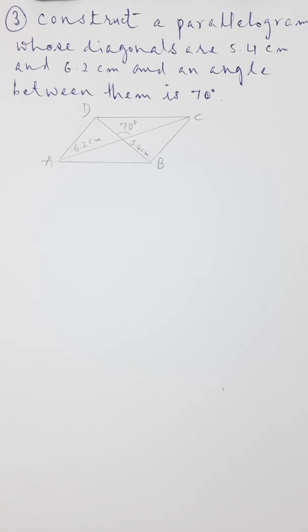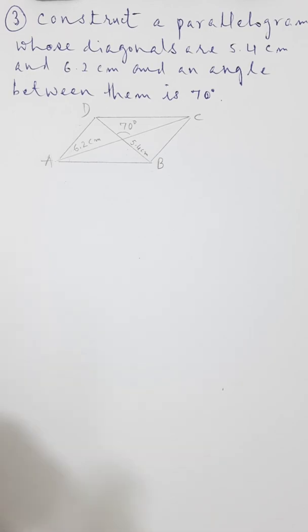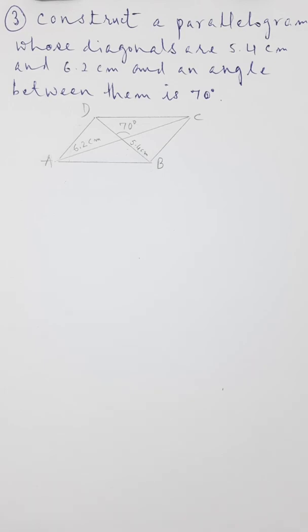Hi and hello everyone, welcome to YouTube channel Mass Classes by Sandeep. Today in this video we will learn how to construct a parallelogram in which two diagonals are given and the angle between them is given. One diagonal is 6.2 centimeters, the other is 5.4 centimeters, and the angle between them is 70 degrees.